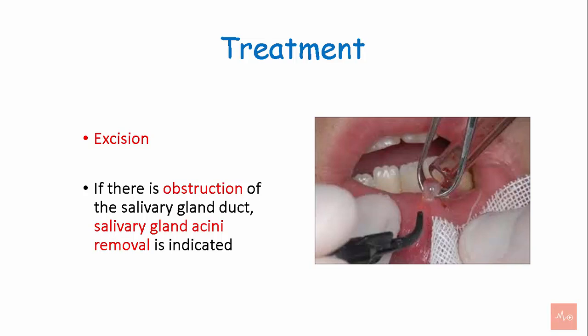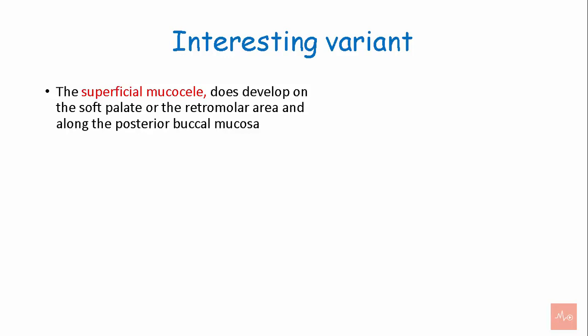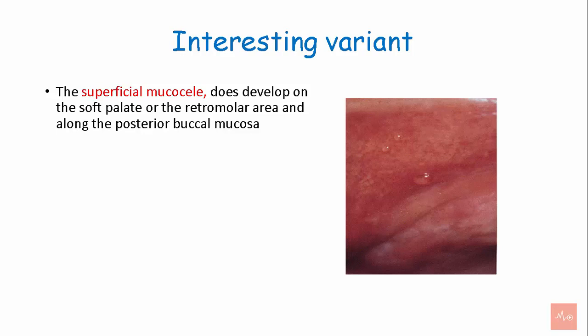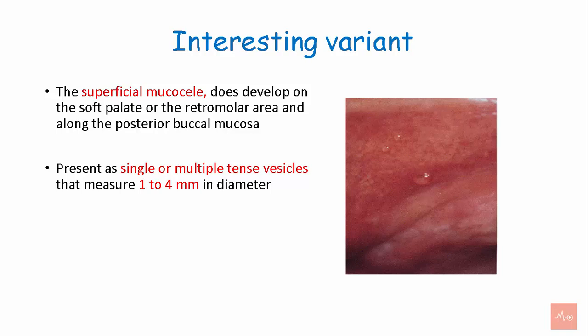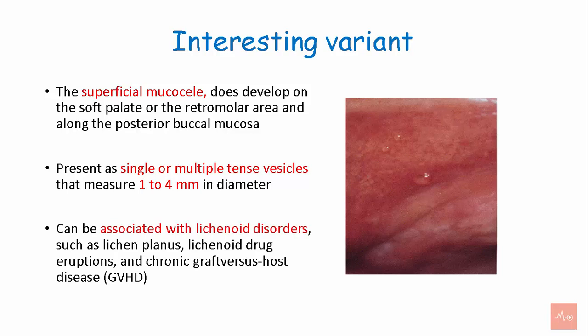Interesting variant: The superficial mucocele develops on the soft palate or the retromolar area along the posterior buccal mucosa. It is present as a single or multiple tense vesicle measuring 1–4 mm in diameter. It can be associated with lichenoid disorders such as lichen planus, lichenoid drug eruptions, and chronic graft-versus-host disease. The lesion often bursts, leaving a shallow painful ulcer that can heal within a few days.